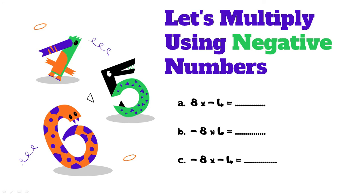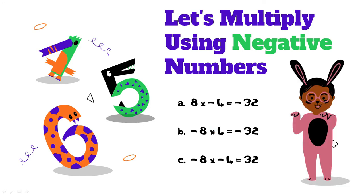Let's multiply using negative numbers. A: eight times negative four. B: negative eight times four. C: negative eight times negative four. Remember the rules: a positive times a negative gives a negative number; a negative times a negative gives a positive number. A gives negative thirty-two, B gives negative thirty-two, and C gives positive thirty-two.